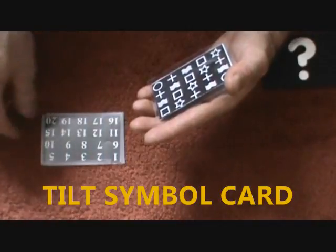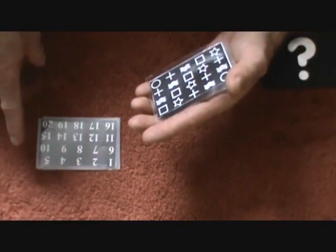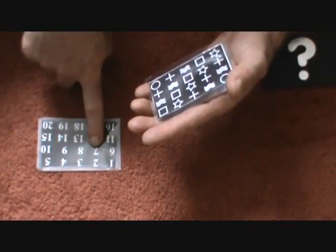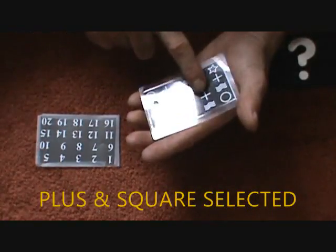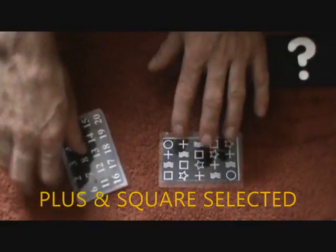Spectator number one is thinking of the square. Let's say this guy thinks of seven. Completely free choice, so according to this, he's thinking of plus. So you have the plus and the square.